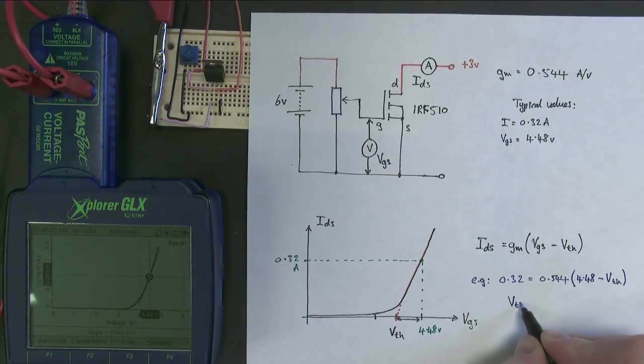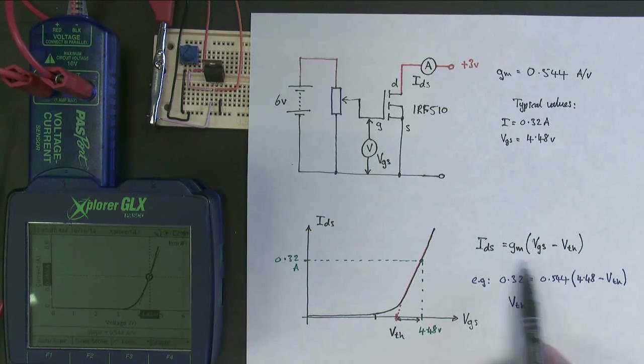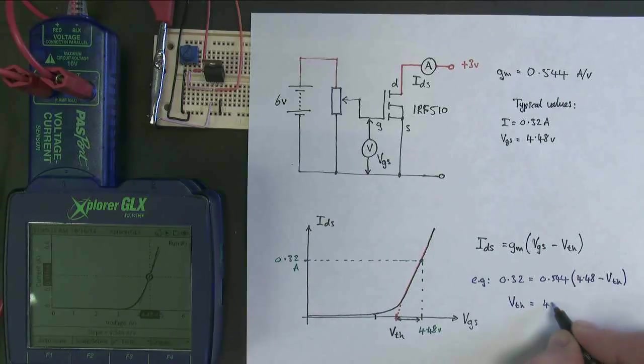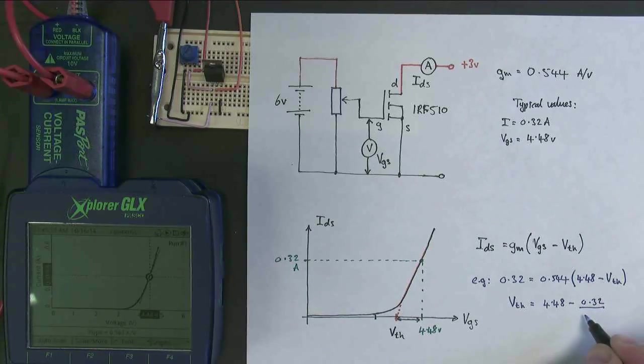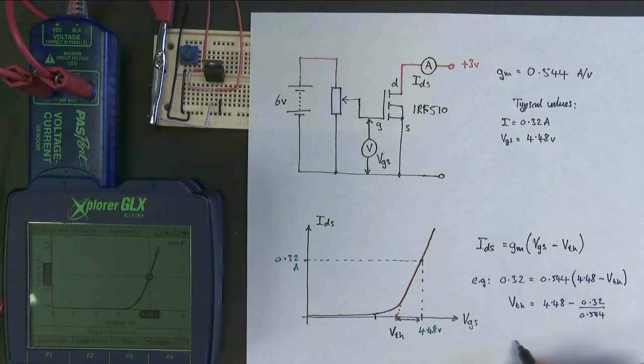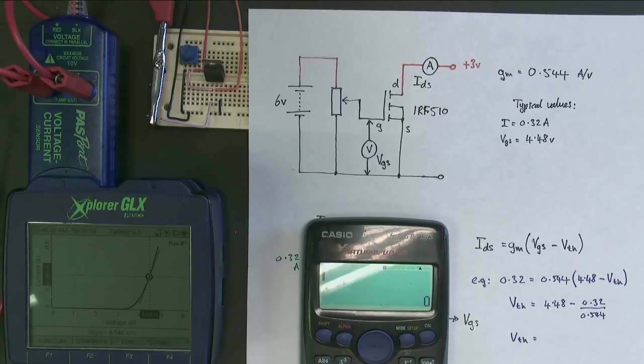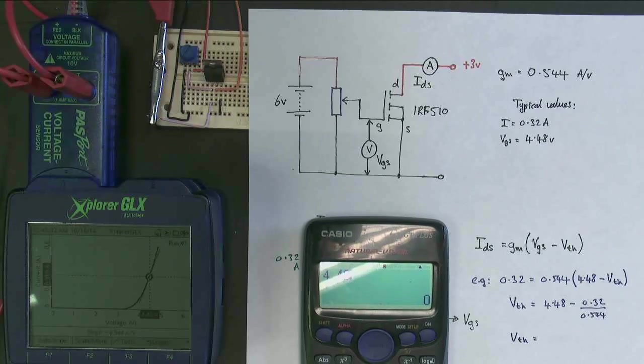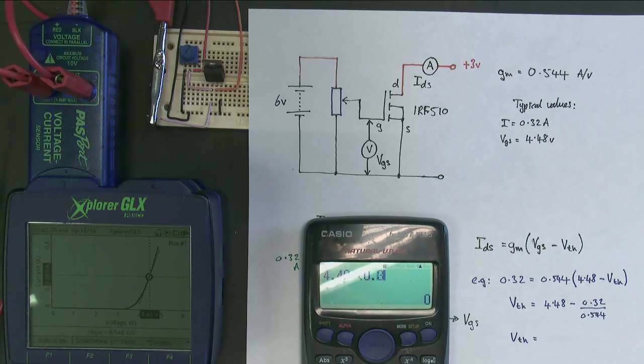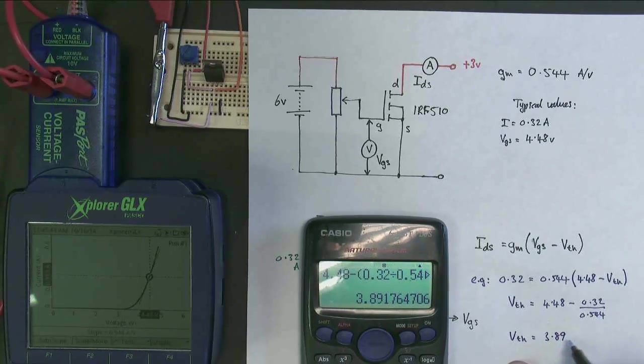So simply a case of rearranging all of that. So hoping your math is good enough for this if you're doing A-level electronics. That goes down the bottom. That goes over that side. This lot goes over that side. So you get 4.48 minus 0.32 over 0.544. So my threshold voltage comes out to be, if I get my calculator out, so here it is. So we go 4.48 minus, open brackets, 0.32 divided by 0.544, close brackets, equals 3.89 units of volts.